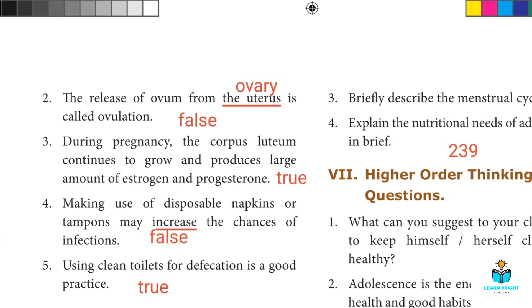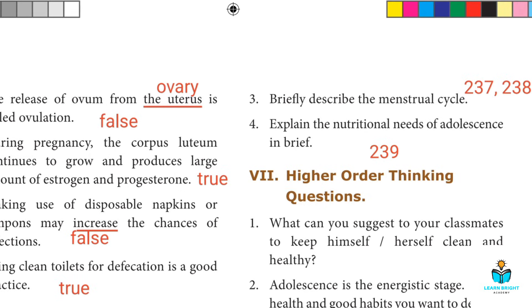Fourth question: Explain the nutritional needs of adolescence in brief. The answer is on page number 239.